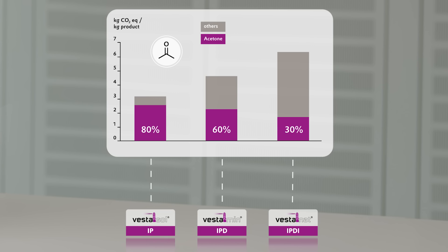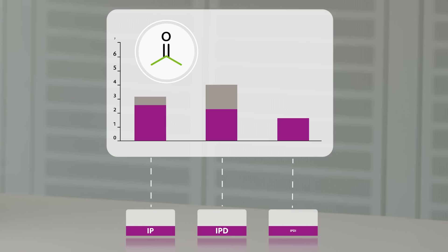So, if we want to make the i-chain more sustainable, we have to start with a renewable acetone having a significantly reduced CO2 footprint.